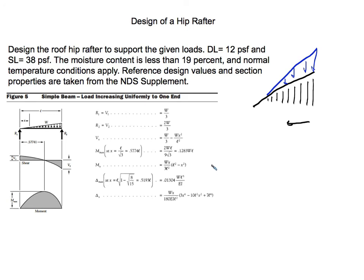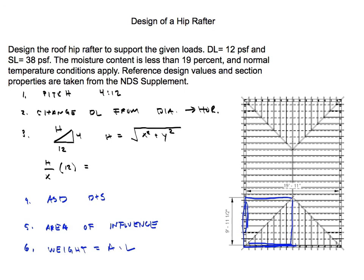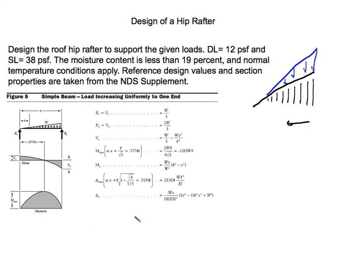This is part one of the video — I'll stop here and do a quick recap. We have a hip roof and we're designing the hip beam. You need to know the pitch to convert the dead load from a diagonal to a horizontal projection, then add the dead and snow loads together. Multiply that loading by the area of influence to get the weight on the hip beam, then plug that weight into the triangular load equations for maximum moment and shear. The next video will go through the full calculations with actual numbers.